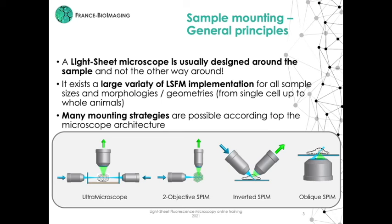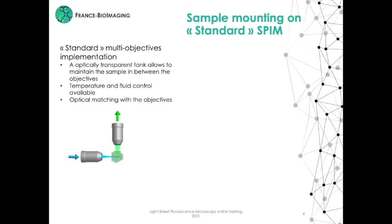The classic multi-objective SPIM has excitation and detection objectives in the horizontal plane, where the sample is held vertically in between the objectives. The inverted SPIM configuration has the sample mounted horizontally on a glass cover slip with objectives above, like in an upright microscope geometry. The oblique SPIM uses a single, generally high numerical aperture objective and illuminates samples mounted horizontally onto a glass cover slip. In the classic SPIM configuration, the sample is held vertically and the objectives are in the horizontal plane, with geometries using two, three, or four objectives depending on the optical excitation and detection scheme complexity.